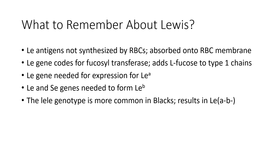Key things to remember about the Lewis system: Lewis antigens are not synthesized by the red blood cells — they are absorbed onto the membrane, which means they can come off. The capital LE gene codes for a fucosyl transferase which adds L-fucose to type 1 chains. The capital LE gene is needed for the expression of Lewis A. The capital LE and capital SE genes are needed to form the Lewis B antigen. The homozygous lowercase le gene is more common in Blacks, resulting in a Lewis A negative phenotype.